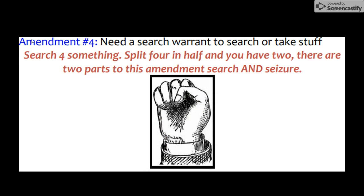With the Fourth Amendment, you hold four fingers up and hide your thumb, because we think of no search and seizure without a warrant. This brings us back to the Revolution and writs of assistance, where soldiers were allowed to come into your home at any time they suspected you may have smuggled goods. Today you need a search warrant signed by a judge for the police to enter your home and take things.